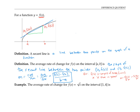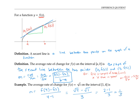Let's compute the average rate of change for the function f of x equals square root of x on the interval from one to four. So the average rate of change is f of four minus f of one over four minus one. Well, f of four is the square root of four, f of one is the square root of one. So that's going to be two minus one over three, or one third.